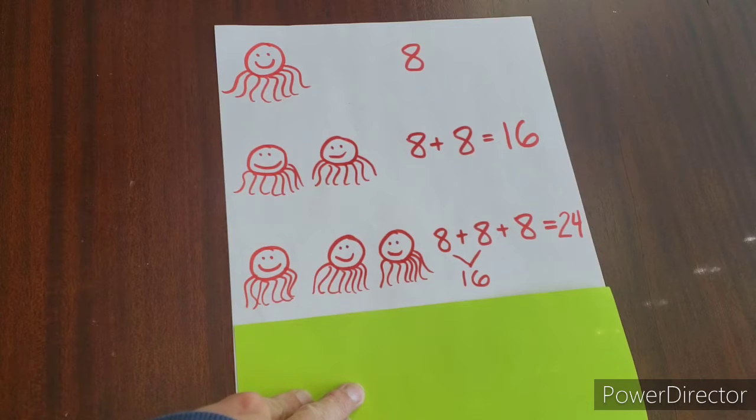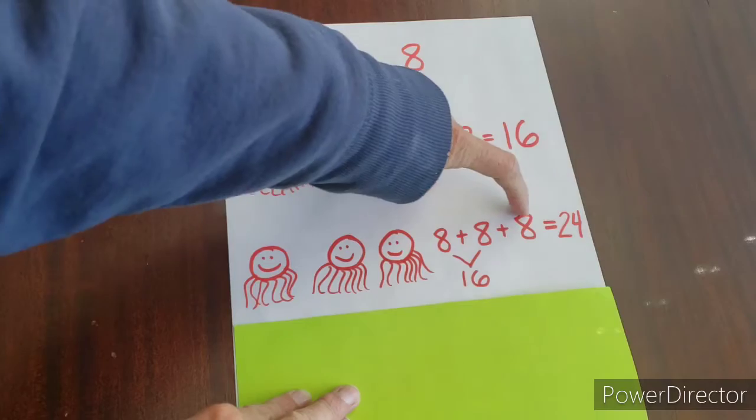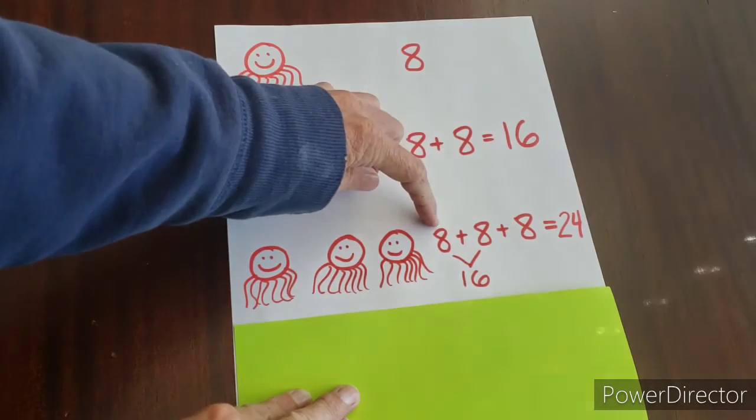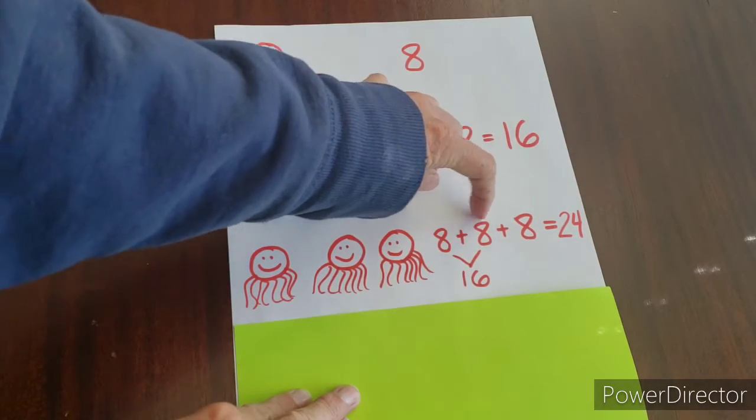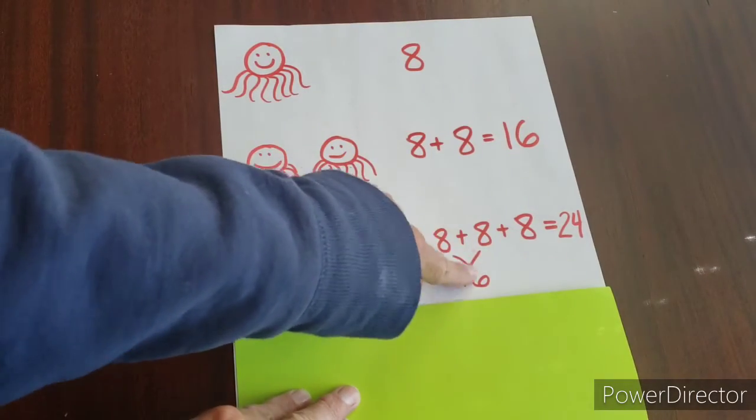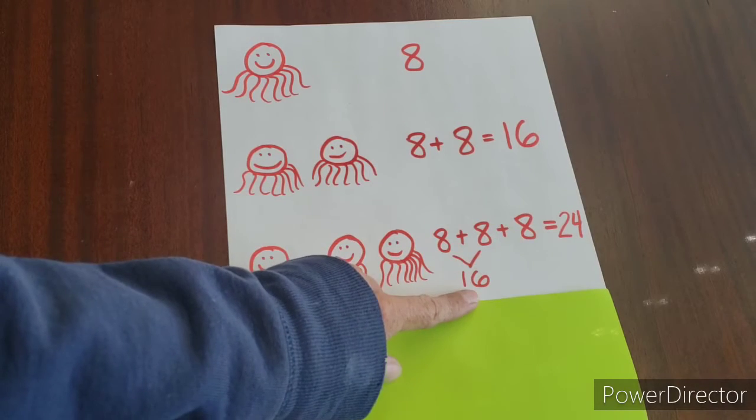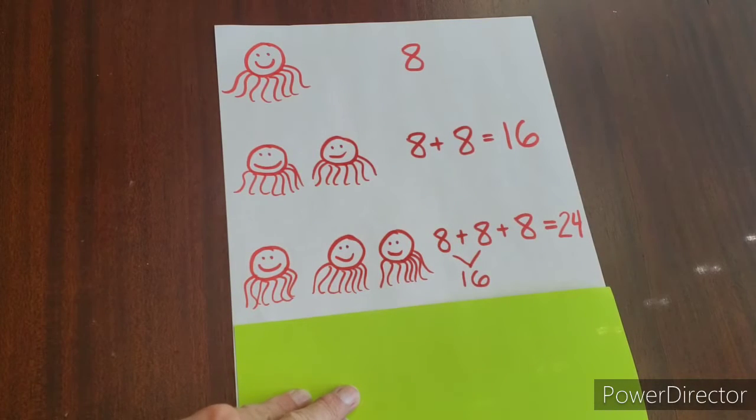But some neat things about math is that there are ways to figure out answers quicker. So another thing that we learned about in first grade is how to add three numbers. So over here, you can say eight plus eight plus eight. And we know that adding two numbers first always helps. So we know that eight plus eight is 16.